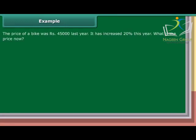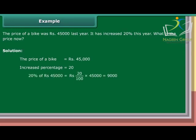Example: The price of a bike was Rs. 45,000 last year. It has increased by 20% this year. What is the price now? Solution: The price of a bike is Rs. 45,000. Increased percentage is 20. 20% of Rs. 45,000 equals Rs. 20 upon 100 into Rs. 45,000, which equals Rs. 9,000. New price equals Rs. 45,000 plus Rs. 9,000, which equals Rs. 54,000.